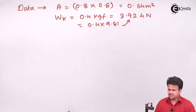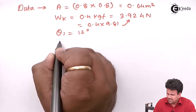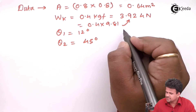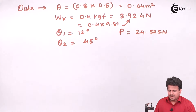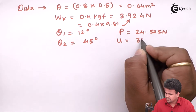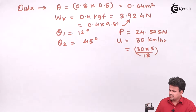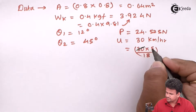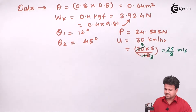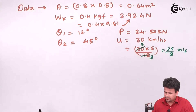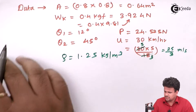The angle made by the kite with the horizontal is 12 degrees, and the angle made by the string is 45 degrees. The force applied by the individual is 24.52 Newtons. The wind velocity U is 30 kilometers per hour, which can be converted as 30 into 5 by 18, giving us 25 by 3 meters per second, approximately 8.33 m/s. The density of air is 1.25 kg/m³.